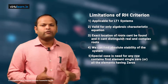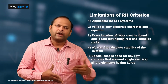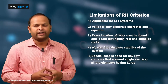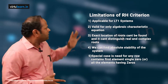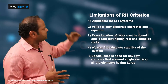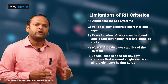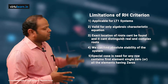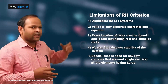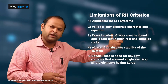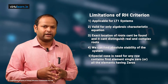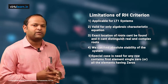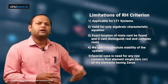Having understood the Routh-Hurwitz criteria for stability, let us look at some of its limitations. First, RH criteria can only be used for LTI (linear time-invariant) systems. Second, the characteristic equation must be in algebraic form — if an exponential term like e^(-std) is present, we cannot apply RH criteria directly; an intermediate approximation such as e^(-s) ≈ (1 - s) is needed.